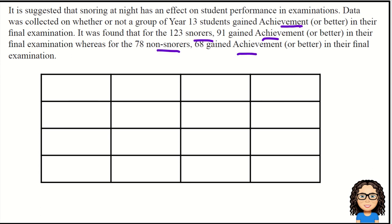What we want to do is divide this up and put the data into a table, but you could do it as a tree diagram or Venn diagram. I'm going to separate this into my snorers and non-snorers, and then my achievement, which I'm going to call E, and E dash, which is our non-achievement. I then want to add in a total column and a total row, and now I need to put the information in.